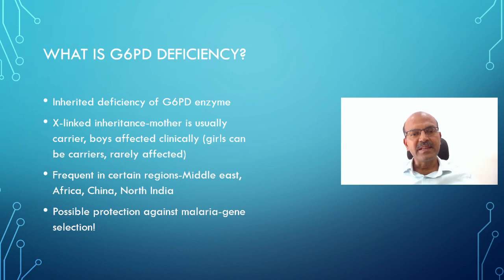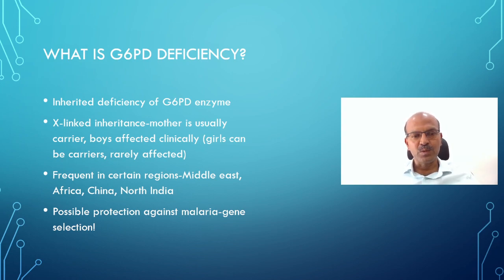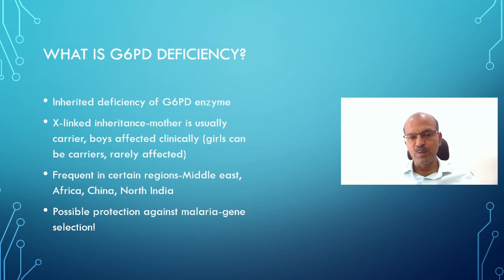When there is inherited deficiency of this enzyme, it is called G6PD deficiency, and typically it is X-linked recessive inheritance. The mother is usually the carrier, boys are affected clinically, and girls can be carriers and are rarely affected. It is frequent in certain regions of the world including the Middle East, which is a Mediterranean type, Africa, China, North India, and so on. The reason it is prevalent in certain populations is a protective effect against malaria, which flourished by gene selection, same as many hemoglobinopathies.